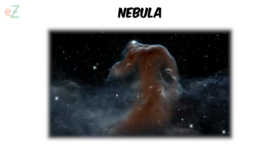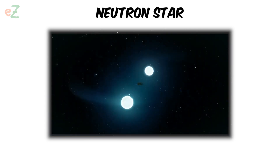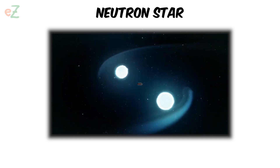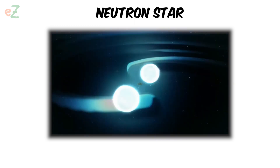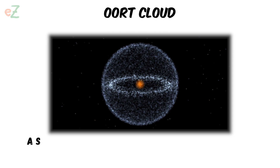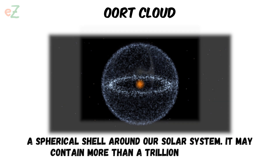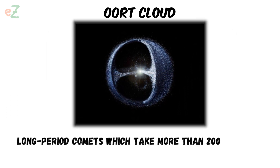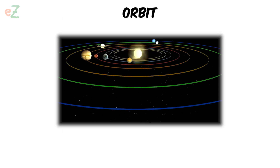Nebula. A cloud of dust or gas found between stars. Neutron star. A very dense star made mostly of neutrons. It has very powerful gravitational force nearby because the whole mass of a star is pulled into one object just a few miles across. Oort cloud. A spherical shell around our solar system. It may contain more than a trillion icy bodies. Long period comets, which take more than 200 years to orbit the sun, come from the Oort cloud.